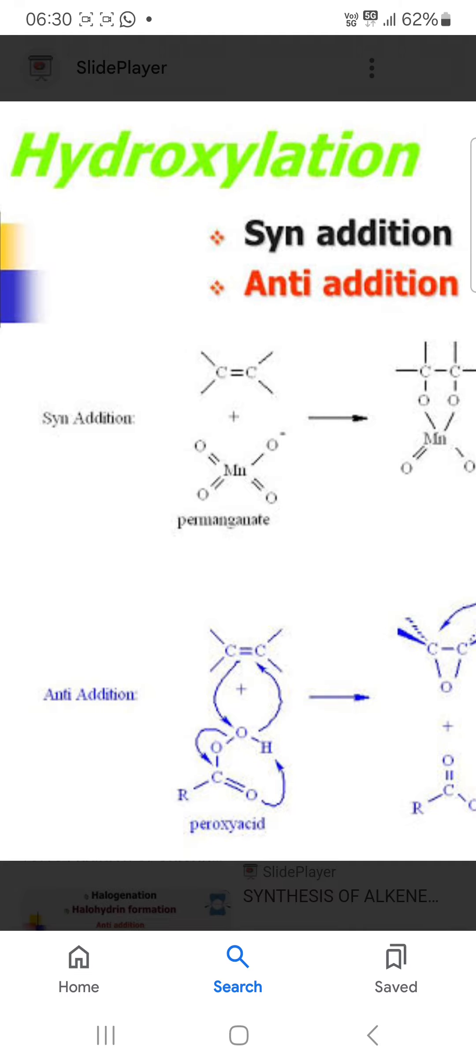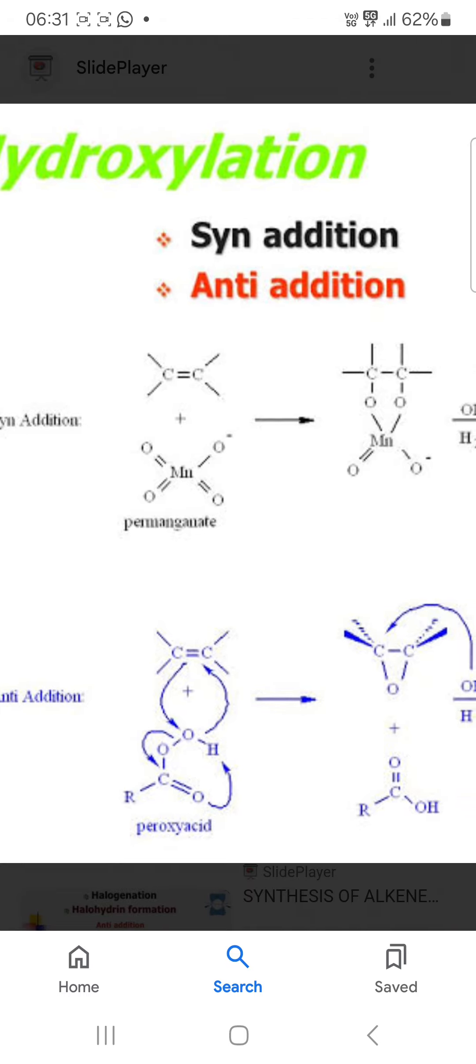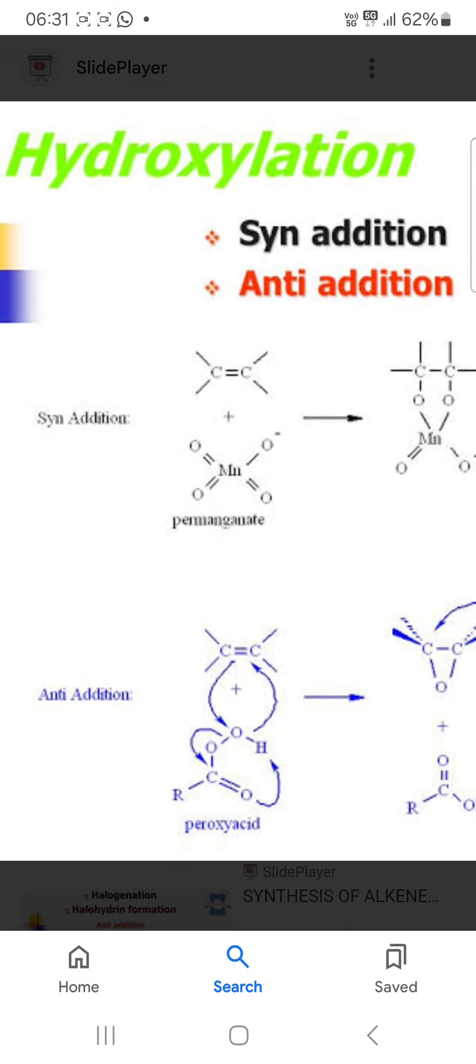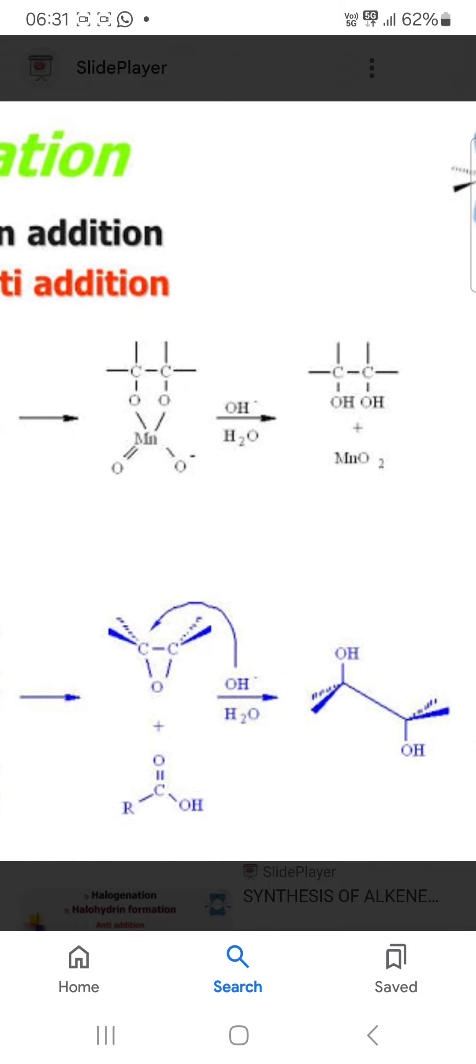You can see the syn additions or anti additions. Additions is the property of alkene. Syn addition gives this diol and anti addition gives this diol.